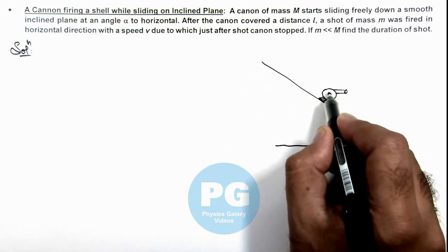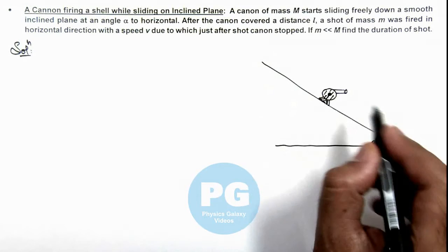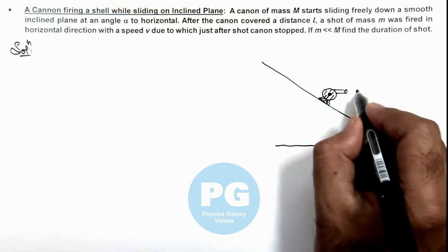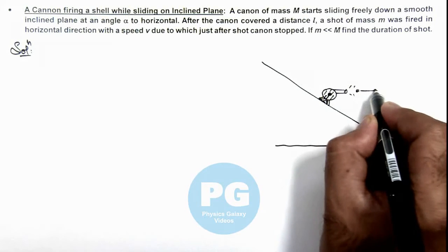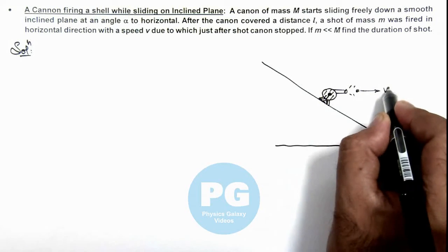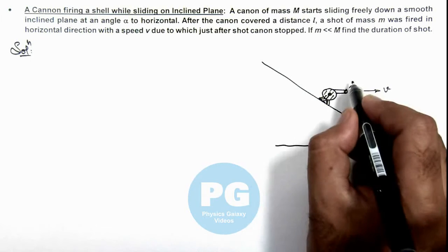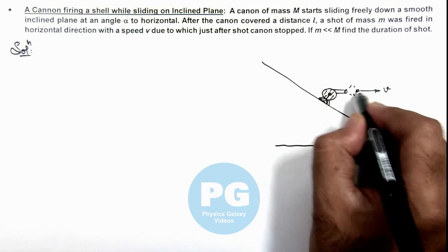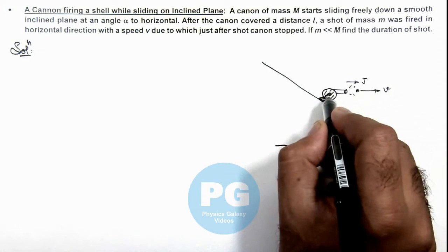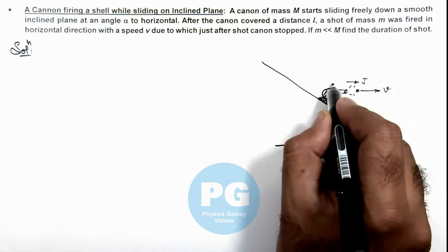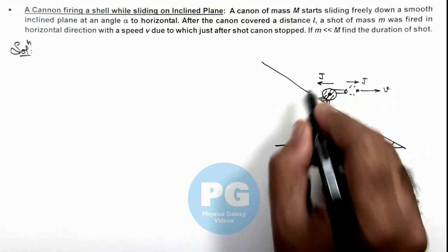In this situation, if the cannon fires a shot, the shell comes out with speed v. An impulse J is imparted by the cannon on the shell, and on the cannon the same impulse J is imparted in the opposite direction.